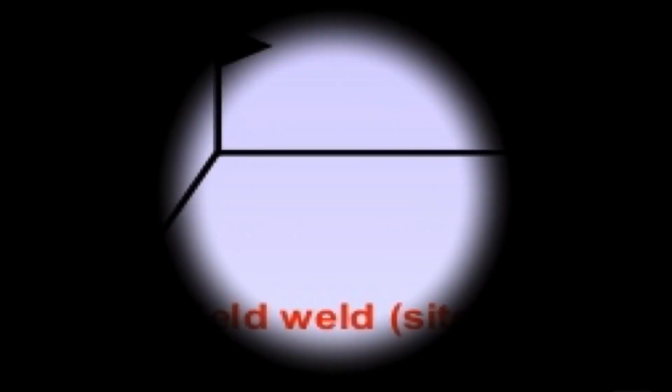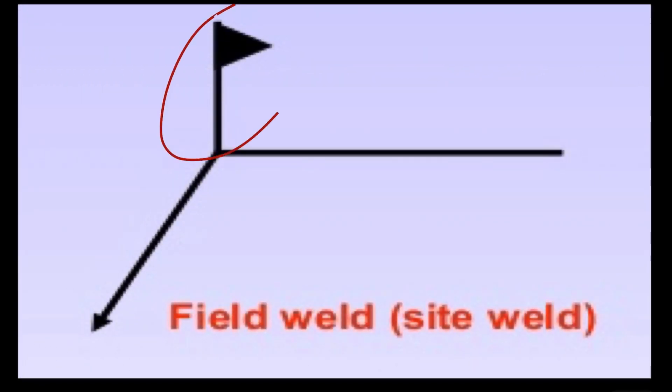Field joints are indicated at the intersection of arrow and the reference line by means of providing a flag symbol.